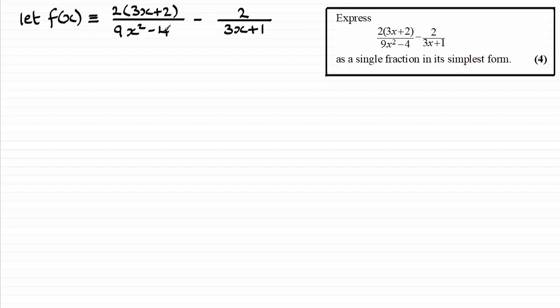Now what I notice is that in the denominator here, 9x squared minus 4, that factorizes. So I want to factorize that first of all. It's the difference of two squares.